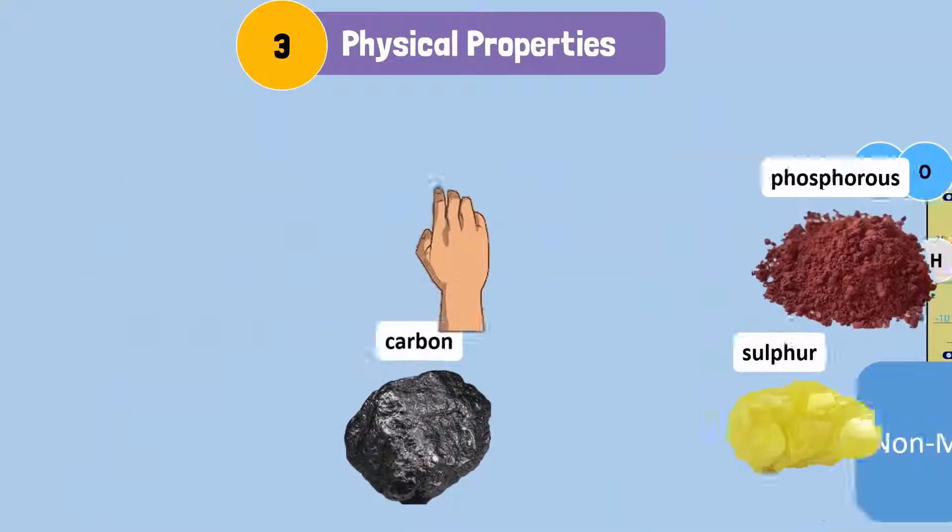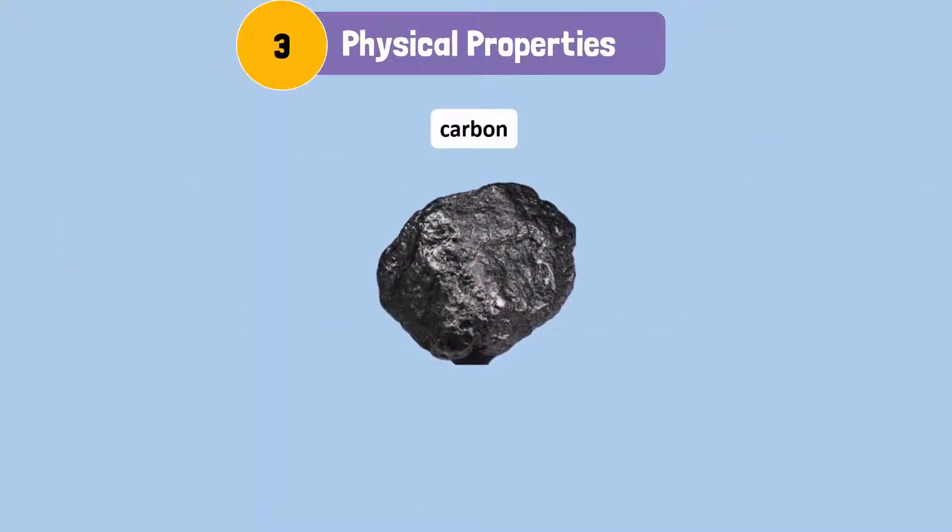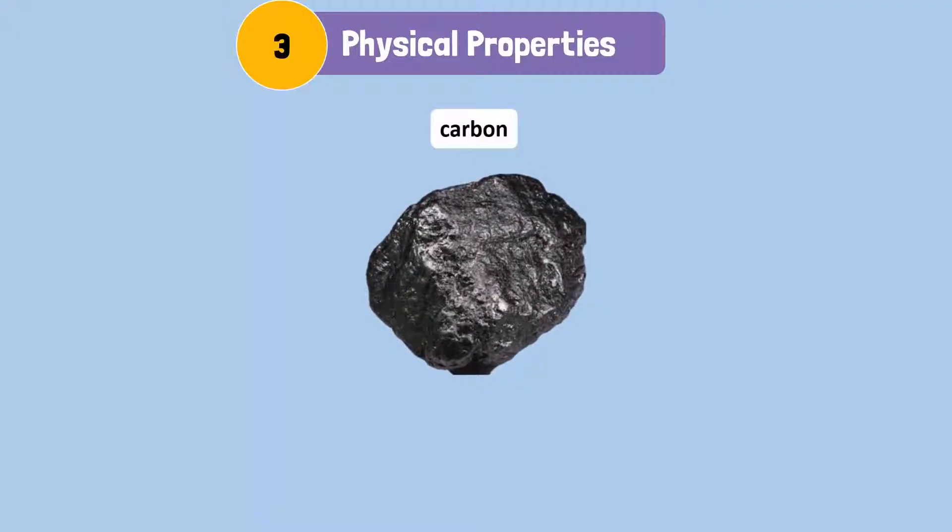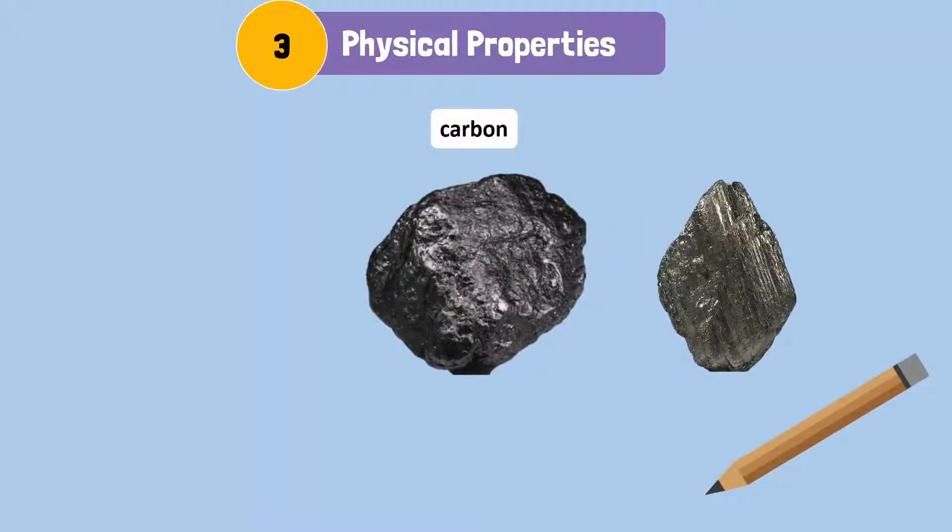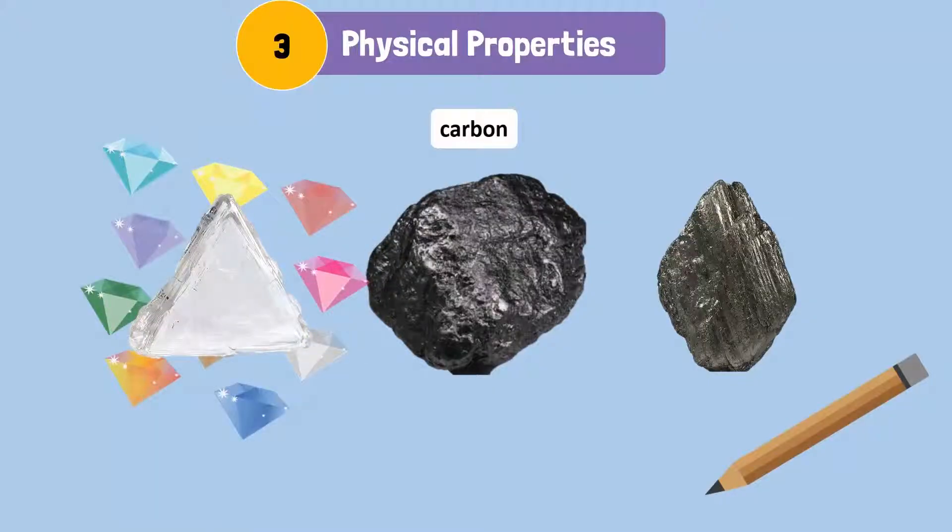Carbon is an interesting element, as it comes in many forms. It can appear as graphite, like the stuff inside your pencil, or diamonds, the stuff that people use as jewelry.